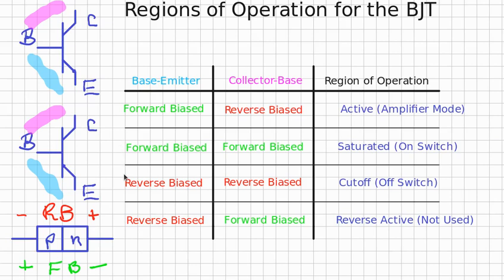If both junctions are reverse biased, the region is called cutoff and the transistor acts like an open circuit or open switch.